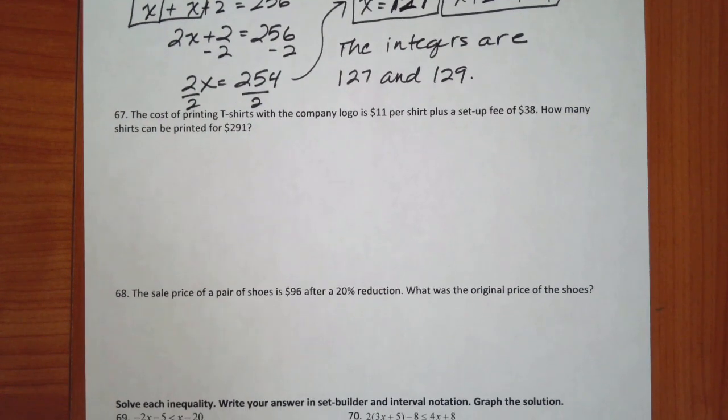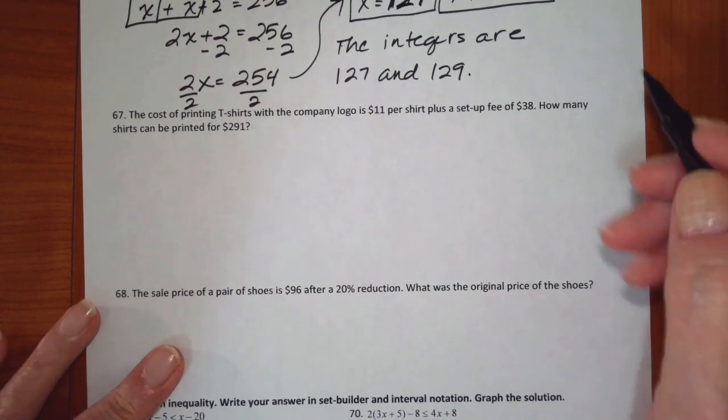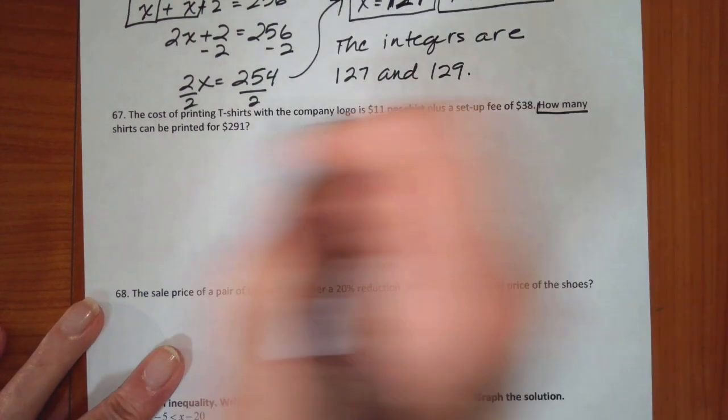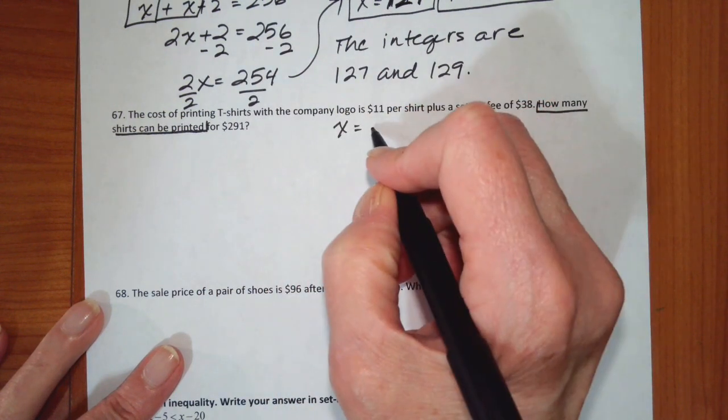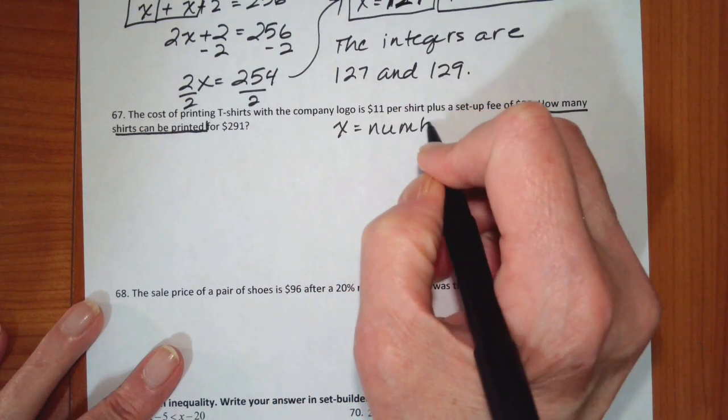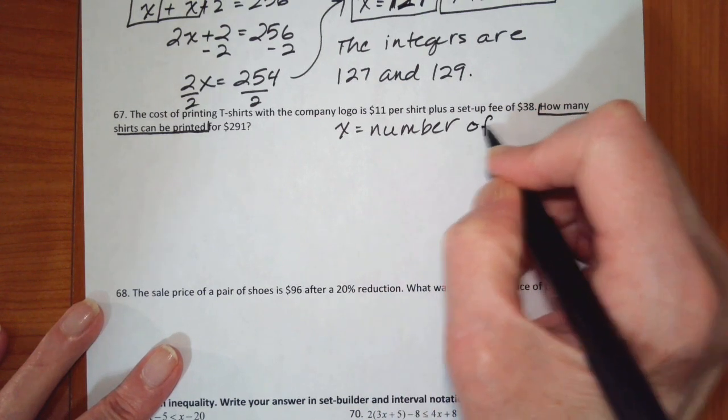Okay. It says the cost of printing t-shirts with the company logo is $11 per shirt plus a setup fee is $38. How many shirts can be printed? That tells me our variable is going to be the number of shirts.